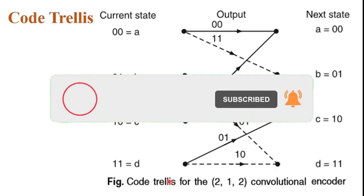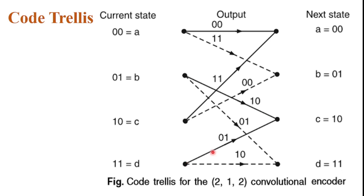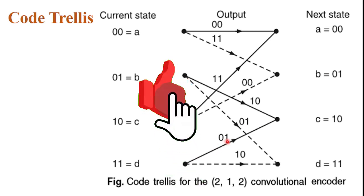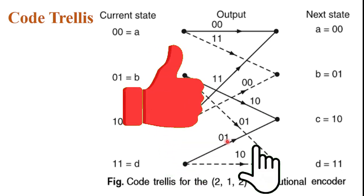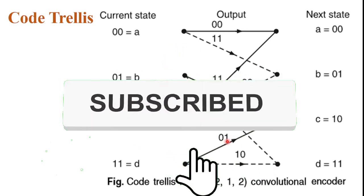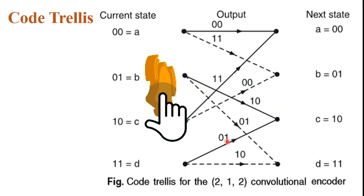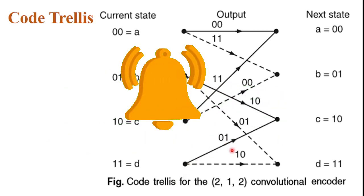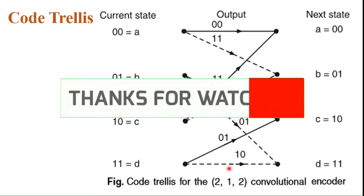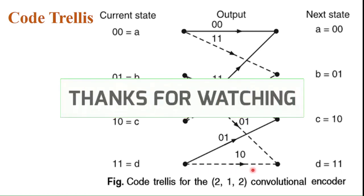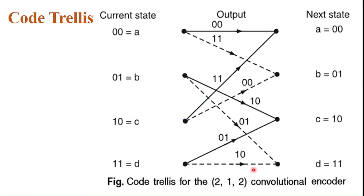So in this diagram we can observe that the solid line always represents the M0 equal to 0 message bit output, and the dashed line represents the M0 equal to 1 output. This is the concept of the code trellis.